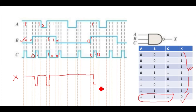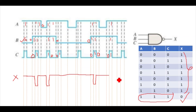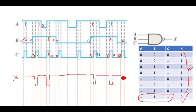C becomes zero here, so the output will again become one. C is zero till this value, so no need to check B and A — it will remain one. At this value, C is one, B is one, and A is also one, so it will again become zero. Then C is zero till this point, so it becomes one again and remains one till this value. At this point B is zero, so it will again remain one.